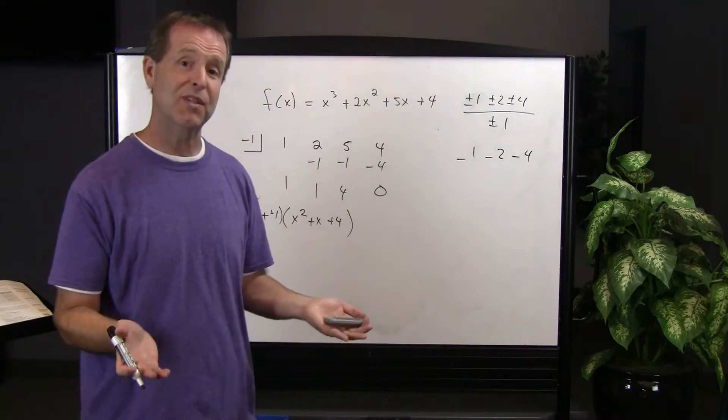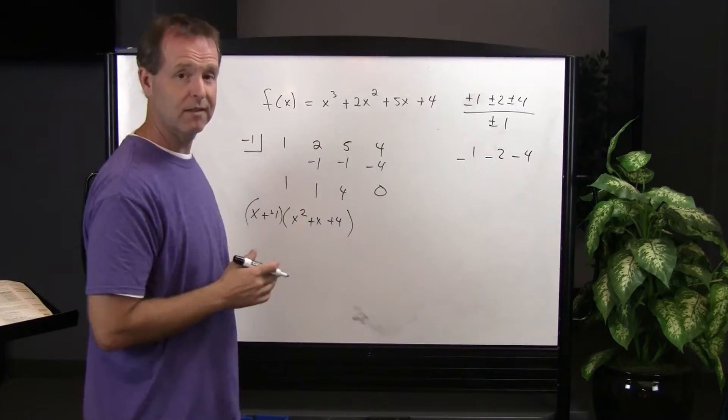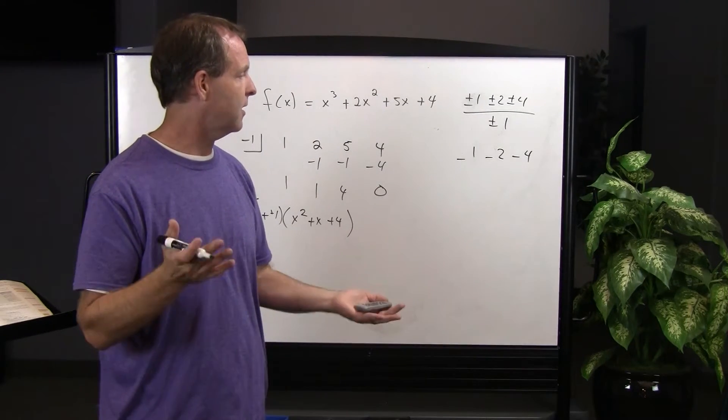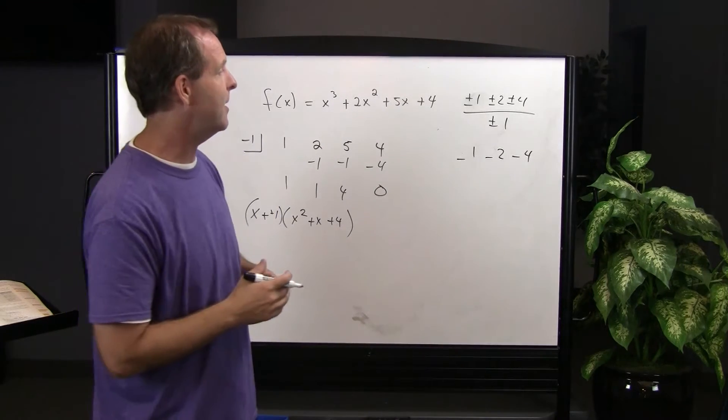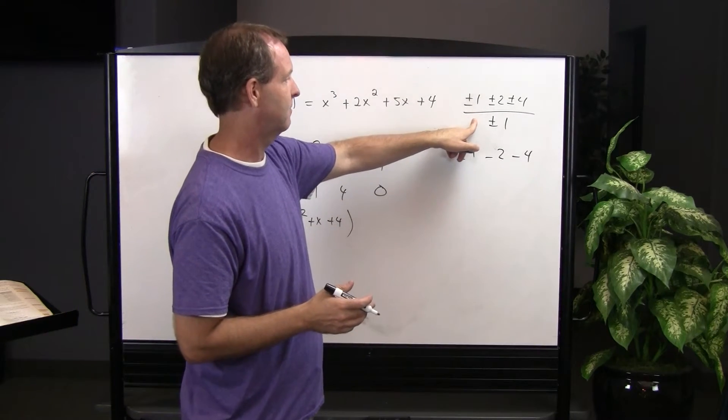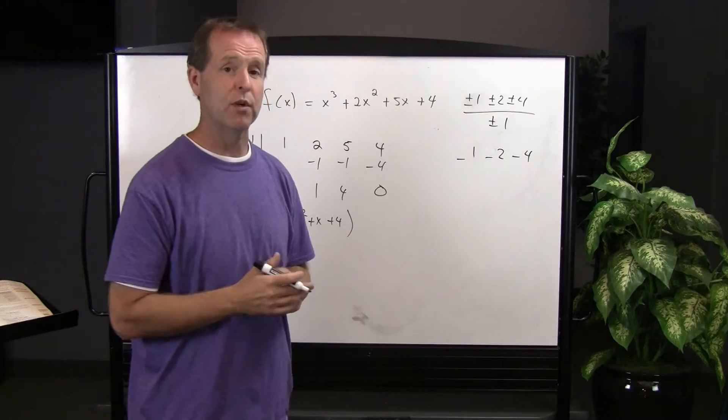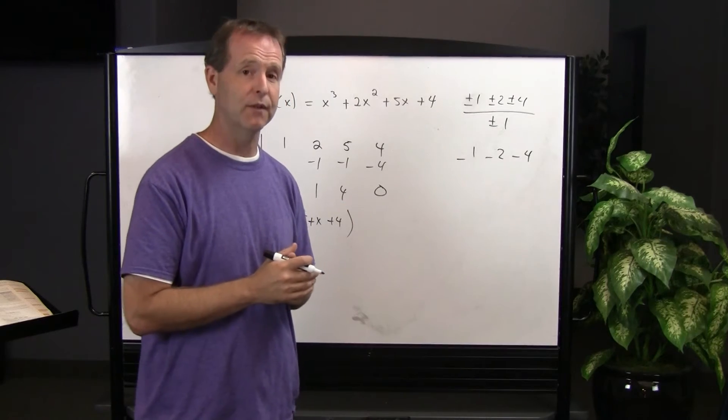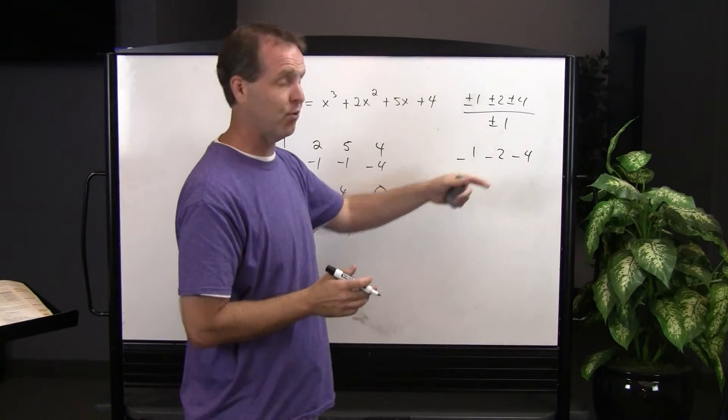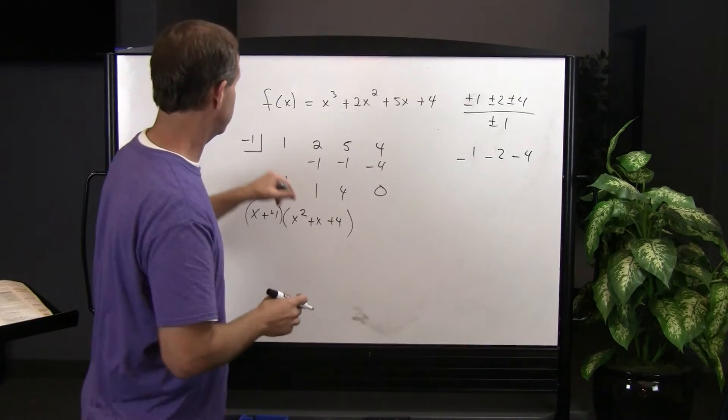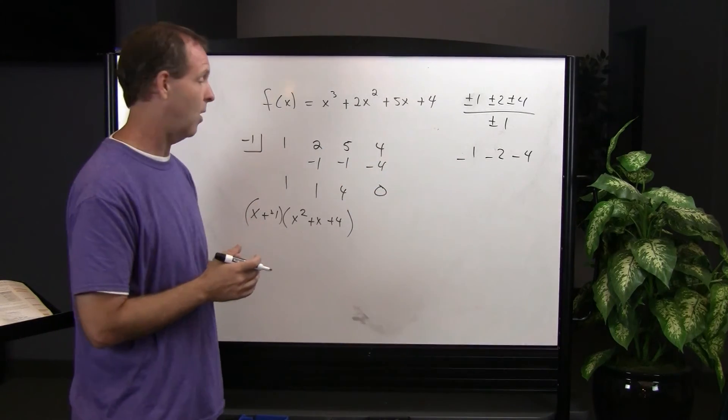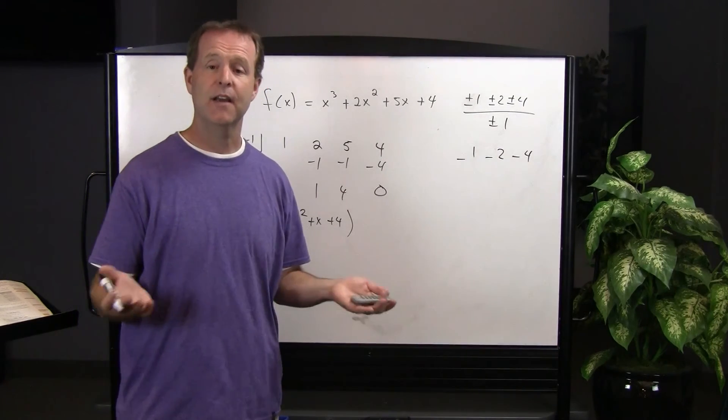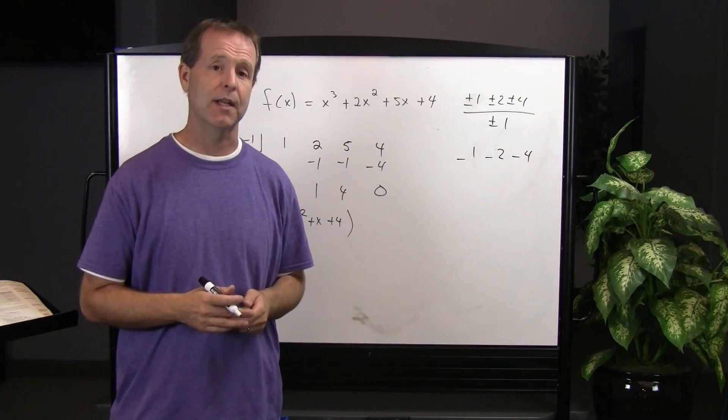So I was able to factor this function by determining how many changes of signs there are to help limit my possible answers. I found out that there were no possible positive real zeros, but there's either three or one negative real zero, so I only had three possibilities to try. I tried negative 1, and sure enough, negative 1 was a real zero. I was able to factor it and continue on. I can continue to factor this to find the other two zeros in this particular equation.